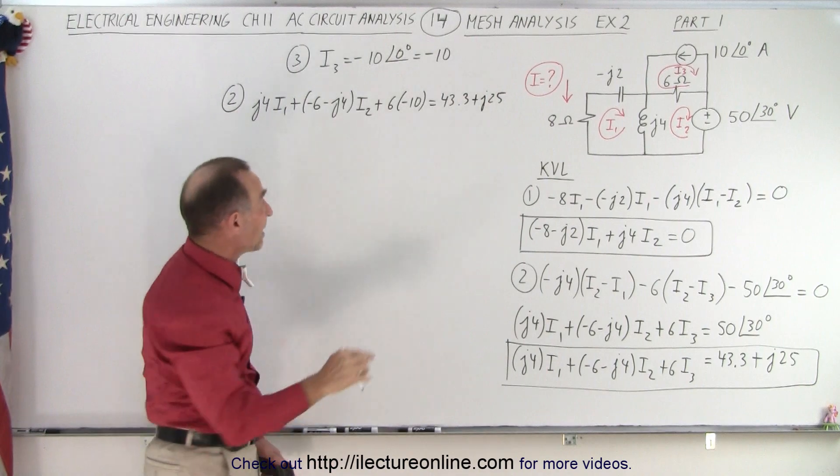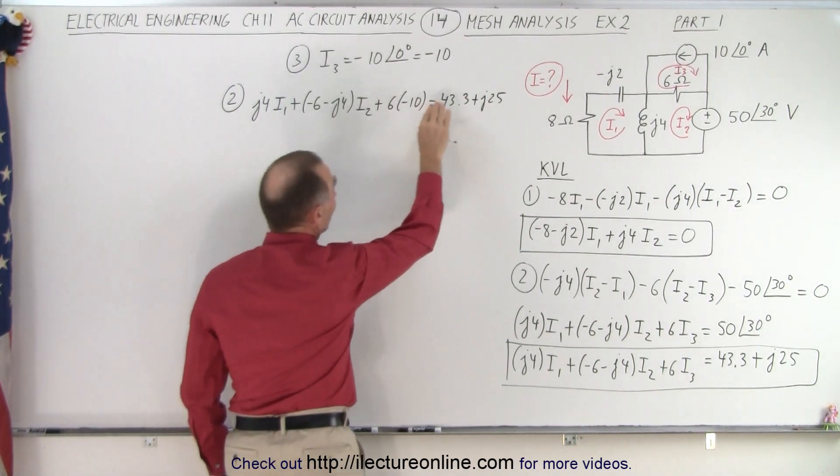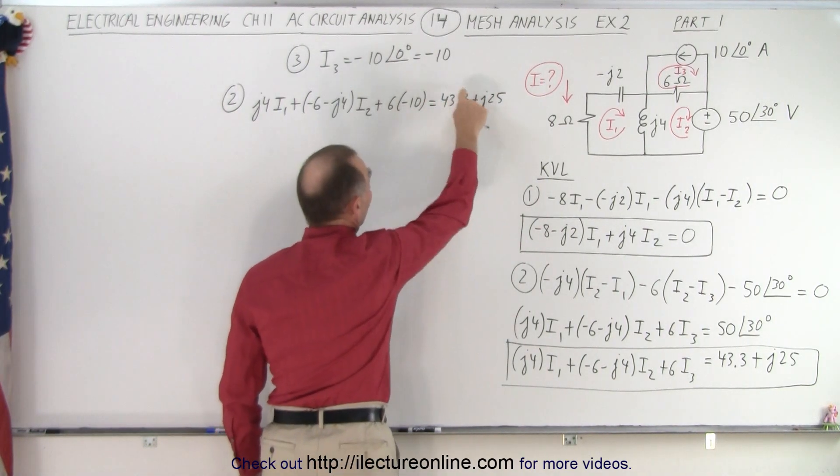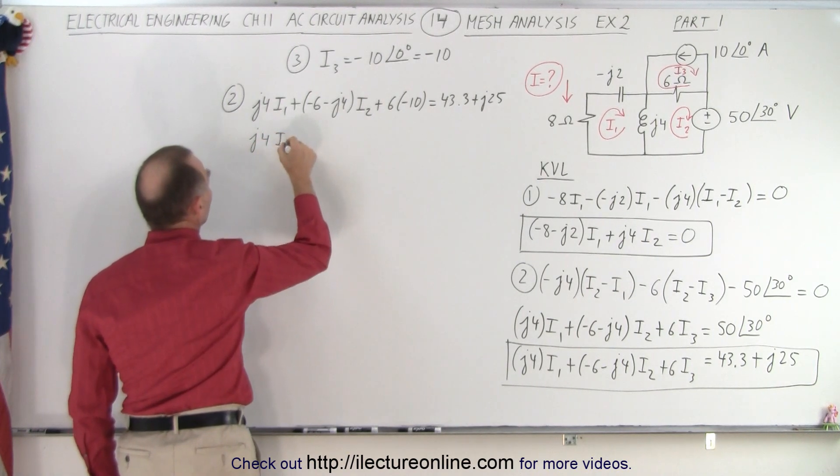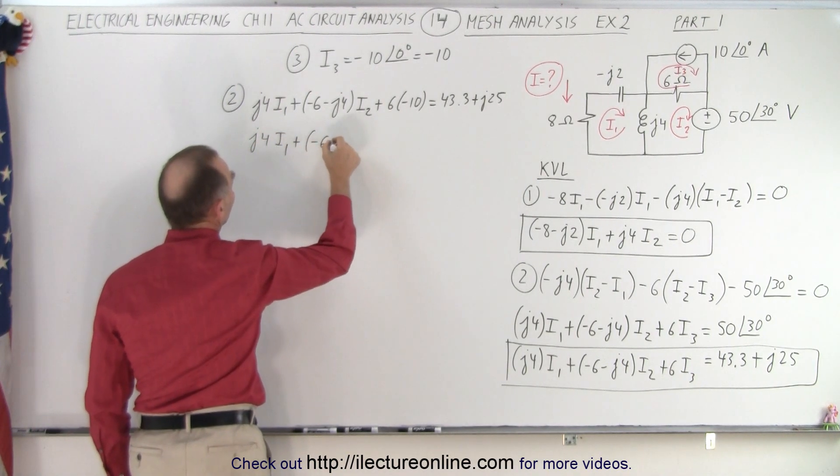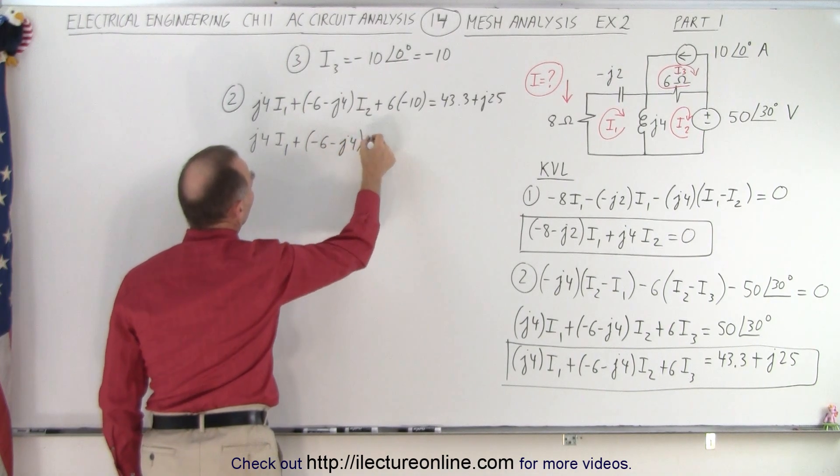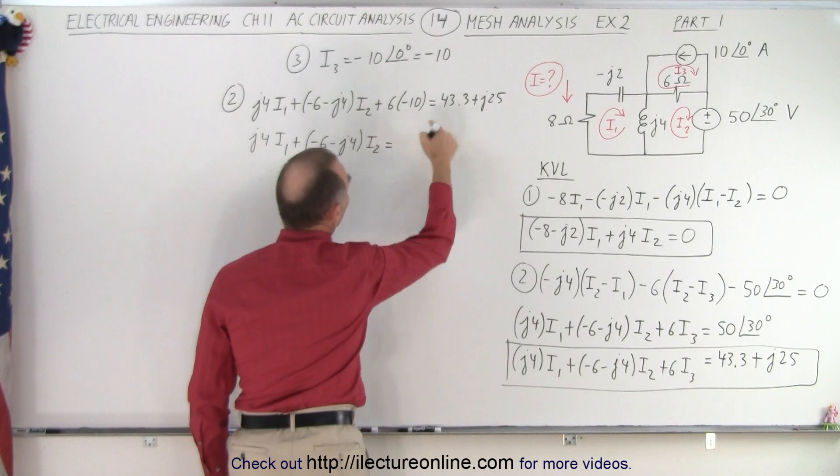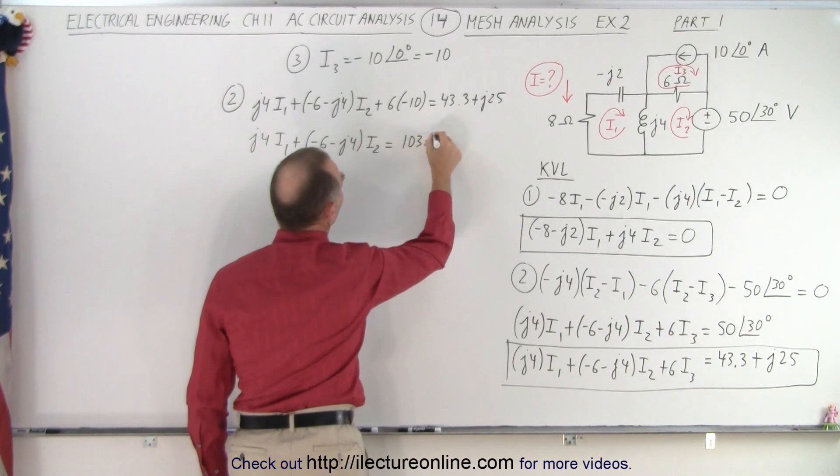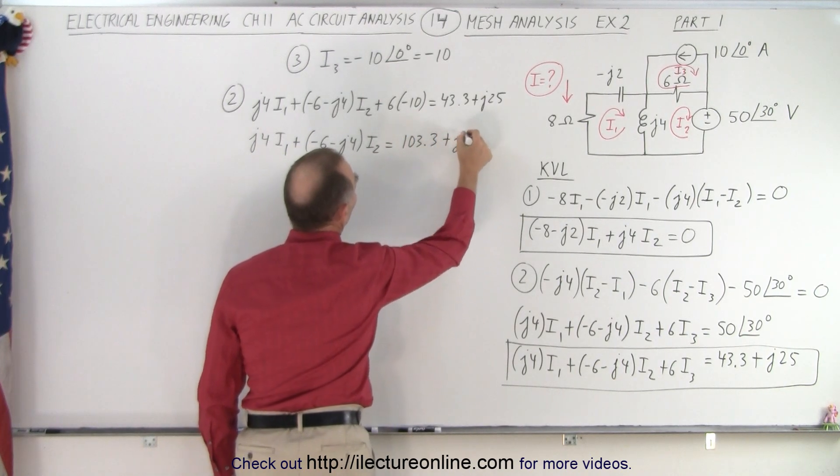Now notice we can take the minus 60 here from the left side, move it to the right side, and add it to the real part of that. So we end up with J4 I1 plus minus 6 minus J4 I2 is equal to 60 plus 43, or 103.3, plus J25.